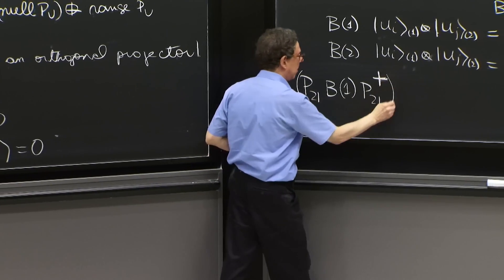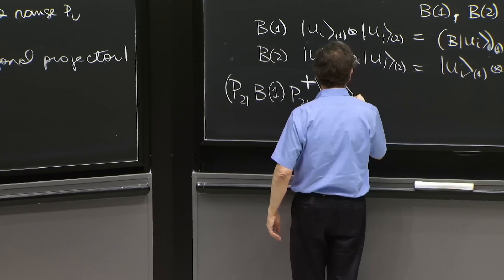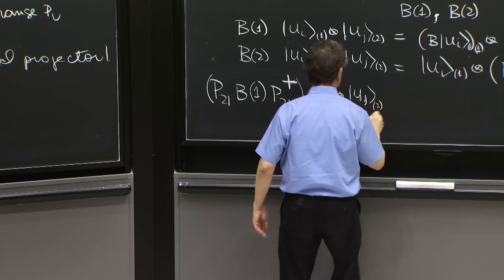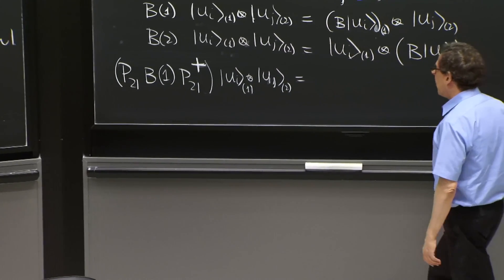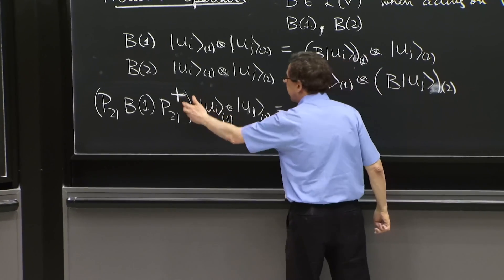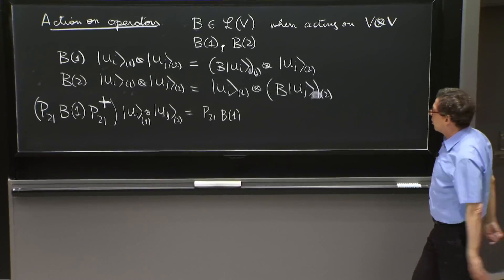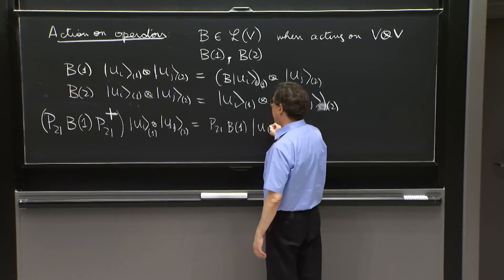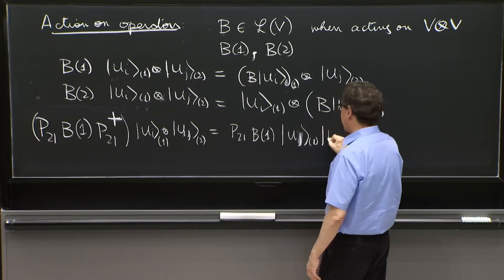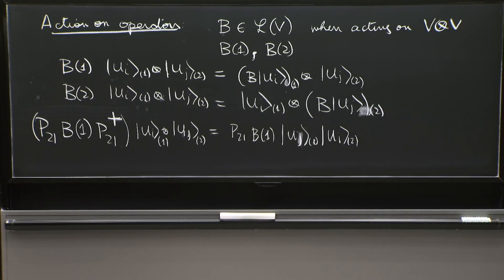So we want to investigate this operator. So what I can do is let it act on ui, uj. So what do we get? We get P21 B1. Now P21 dagger, we saw that it's Hermitian anyway. So it's just P21. And now it acts on ui1, I'll put the j here, and ui2.